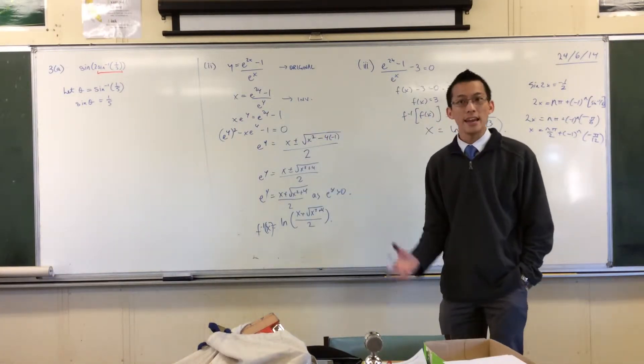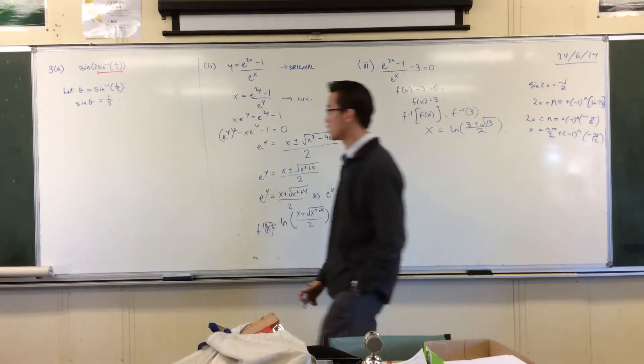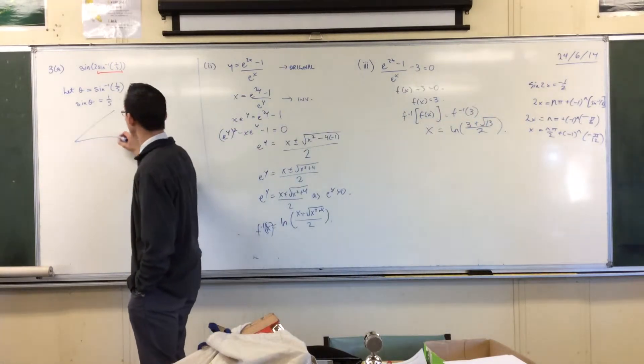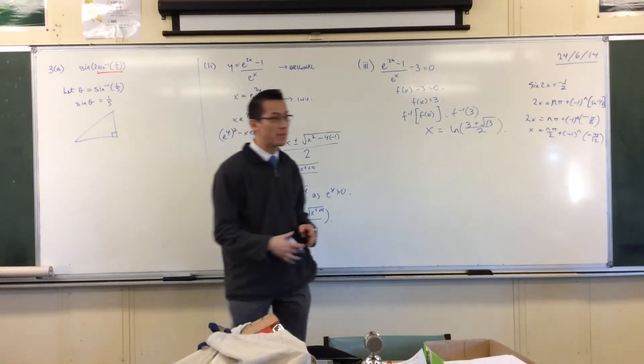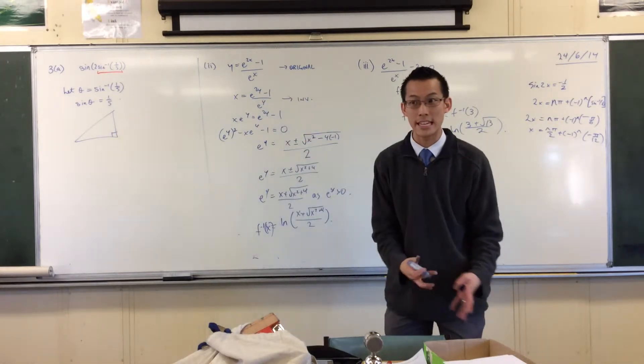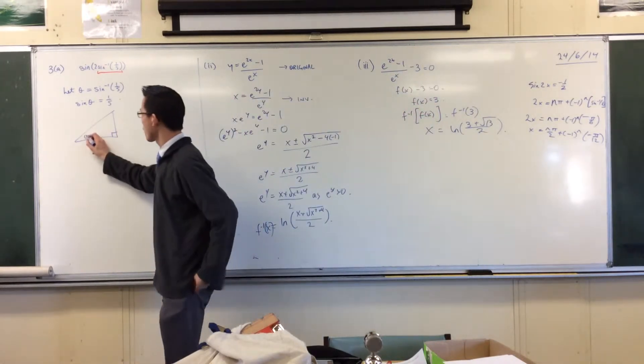So this line here gives me a triangle. Now the reason why a triangle is useful is because it will give me other trig ratios to do with theta, not just sine. So if I put theta over here.